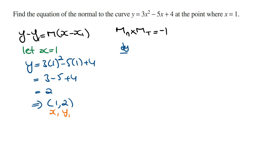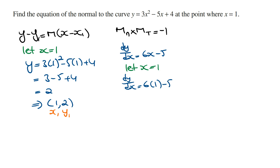Deriving y, dy/dx is going to equal 6x minus 5. If we let x equal 1, then dy/dx is going to be 6 times 1 minus 5, which is 6 minus 5, which is equal to 1. So the gradient of the tangent line at x is equal to 1 is going to equal 1.